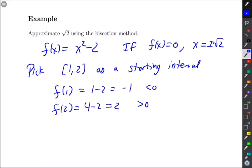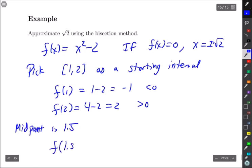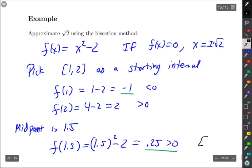So our midpoint here is 1.5 and f(1.5) is 1.5² - 2 which comes out to 0.25 which is positive. So I want to pair the 0.25 with the negative 1 to give me the new interval that I have of [1, 1.5].